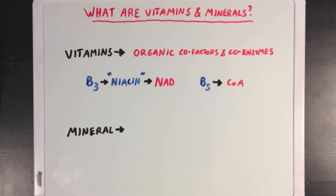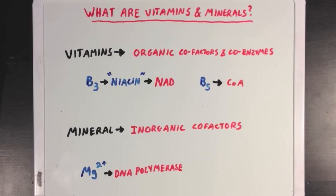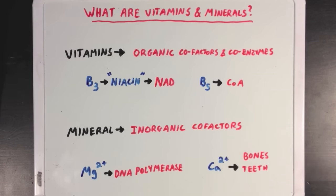Minerals on the other hand are inorganic, meaning they aren't carbon-based, and minerals are usually just cofactors in our body. So magnesium would be a great example of a mineral cofactor that an enzyme like DNA polymerase would use. Now not all minerals act only as cofactors. Some minerals, like calcium, which can act as a cofactor, is also a critically important component of bone and teeth. And it doesn't strictly act as an enzyme cofactor here; it's actually an important part of the structure itself.